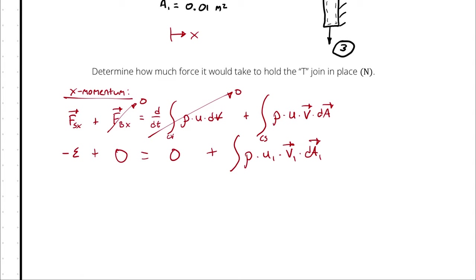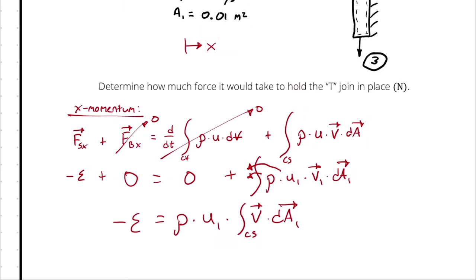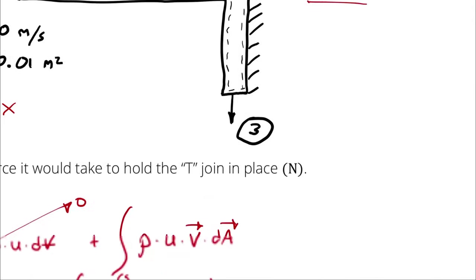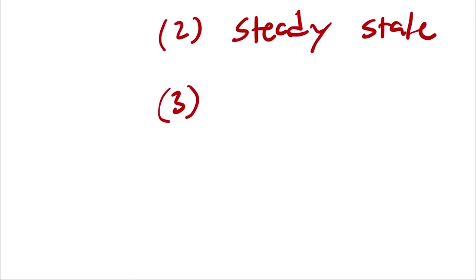So, I will pull out my density, and I will pull out my x component of velocity, at which point I have negative epsilon is equal to density times u1 times the integral of velocity vector, dA1. And then I will collapse that integral by treating the flow at state 1 as being uniform.